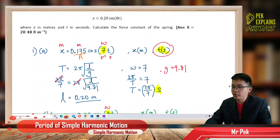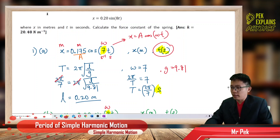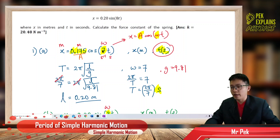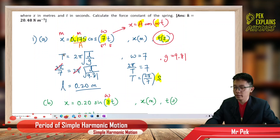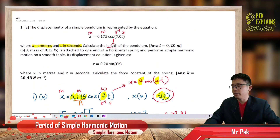Always compare the given equation with the general equation x = A cos(ωt). The amplitude is 0.175 and omega is 7. From omega I get the period, and from the period I get the length using the pendulum formula. Very simple.